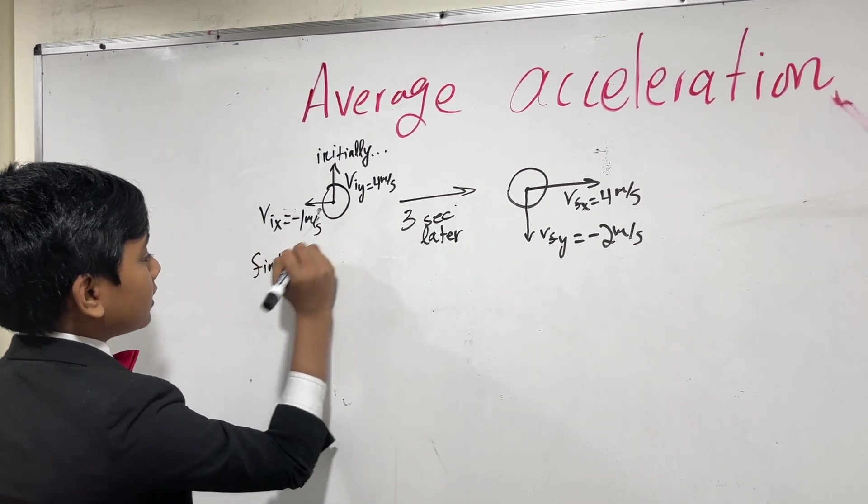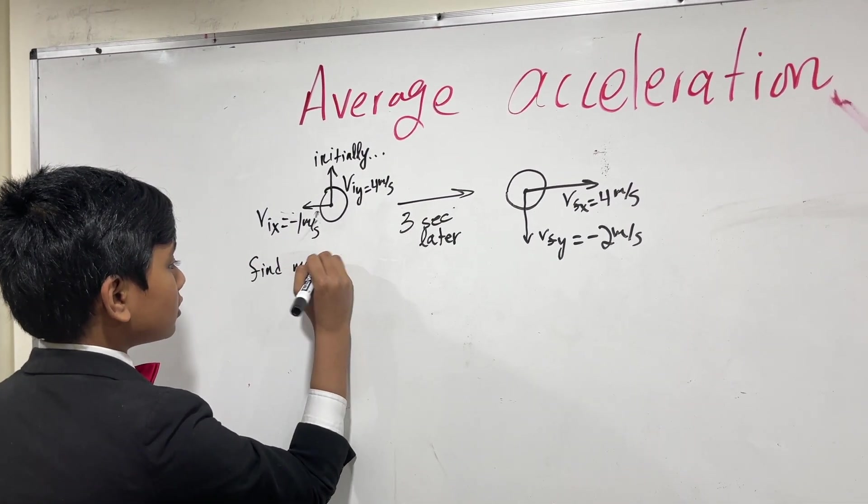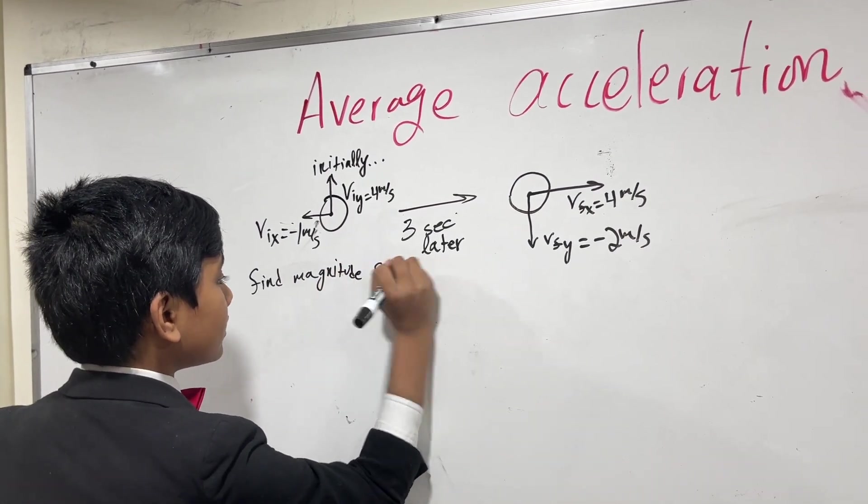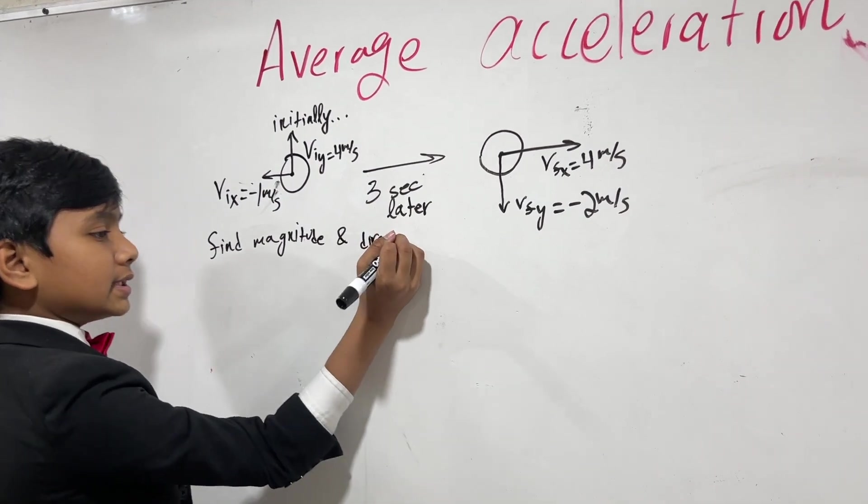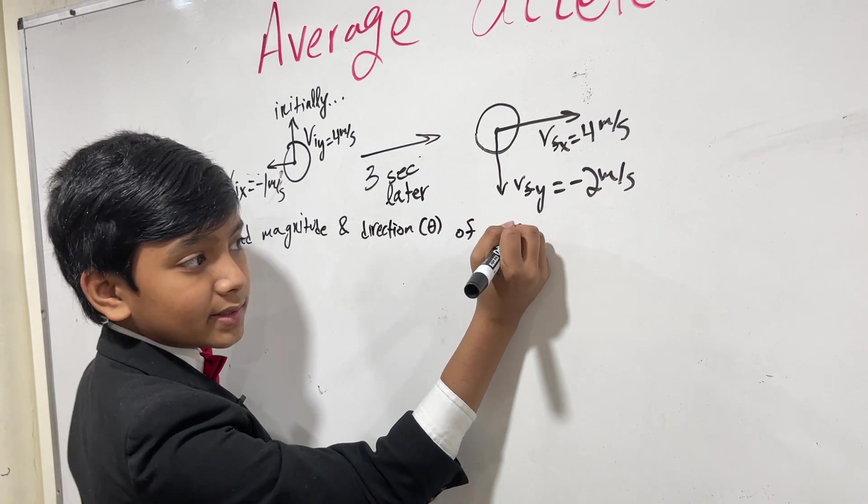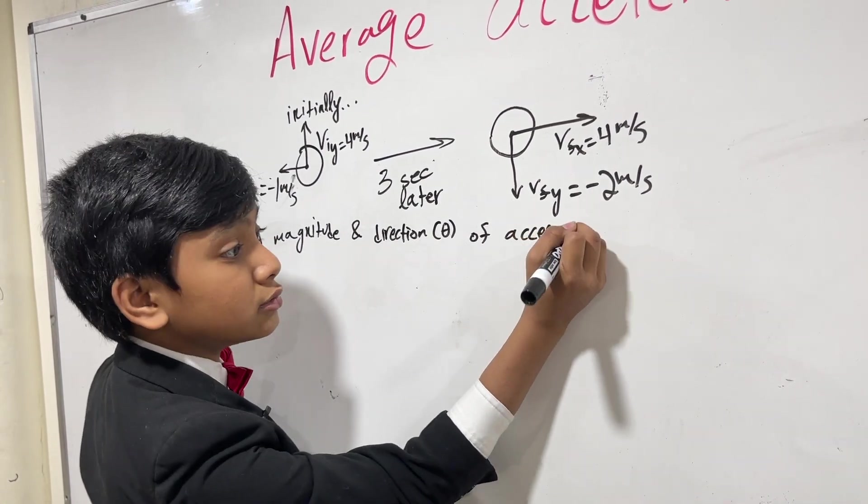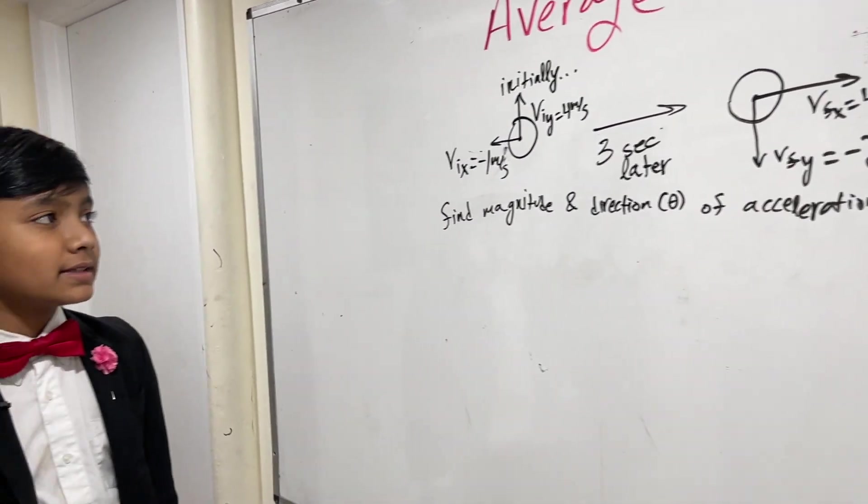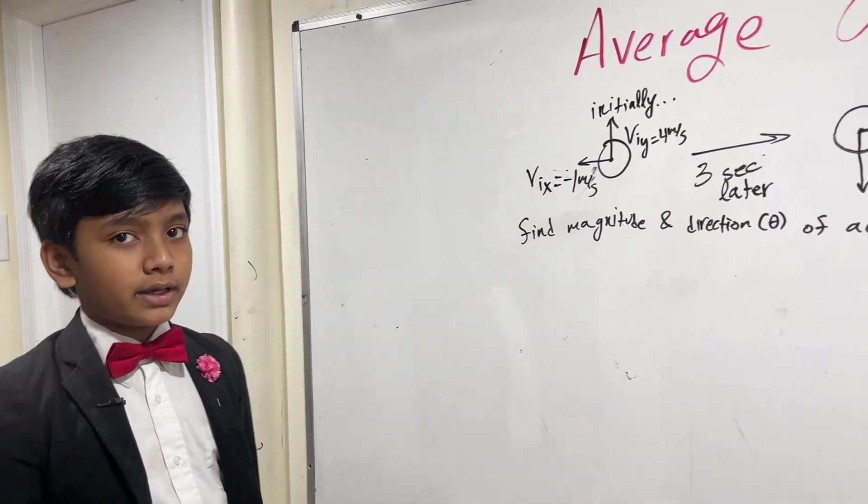Find the magnitude and direction, and by direction, they mean the angle of the acceleration. Alright, so let's do this. So, this is actually pretty easy to know how to break it down.